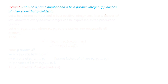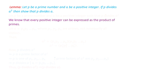To prove this result, we are considering the prime factorization of the positive integer a. From the fundamental theorem of arithmetic, we know that every positive integer can be expressed as a product of primes. So this positive integer a can be written as p1 times p2, and so on up to pn, where p1, p2, up to pn are primes, and they are not necessarily all distinct.